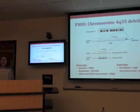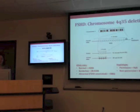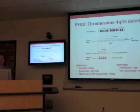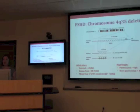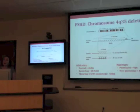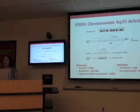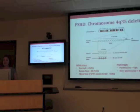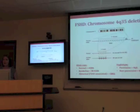A little bit later it was figured out that some people have this deletion but don't have any symptoms of FSH, and it was determined that a nearby DNA sequence called a haplotype is also necessary. There are two haplotypes — the A haplotype and the B haplotype. All people with FSH have the A haplotype, while people who have the B haplotype don't have FSH even if there is a deletion. So deletion plus A haplotype equals FSH — but for a long time we didn't know why.